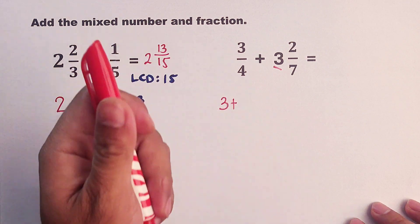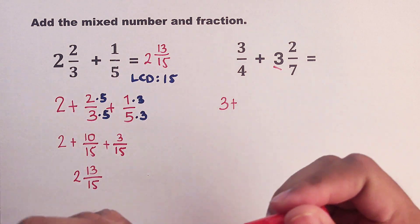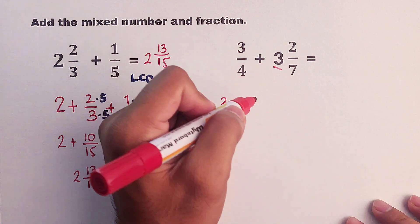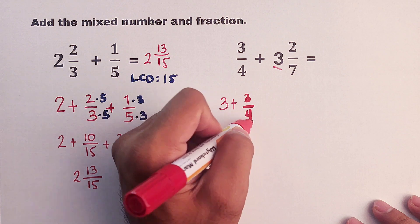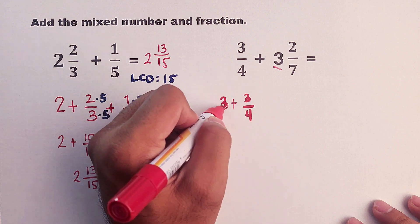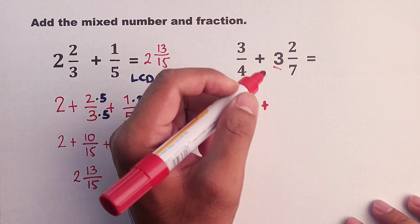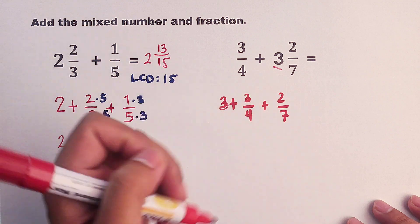Then plus. Now we will change my marker. Now we will add the fractions, 3 over 4 plus 2 over 7.